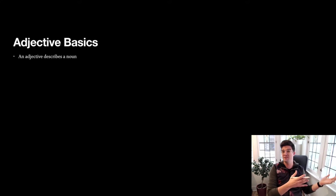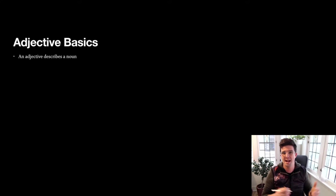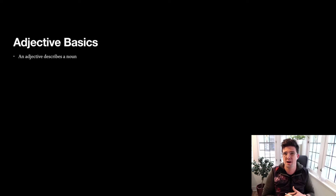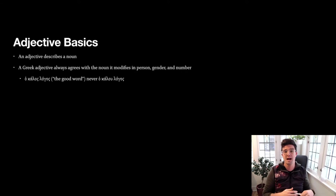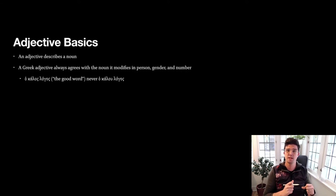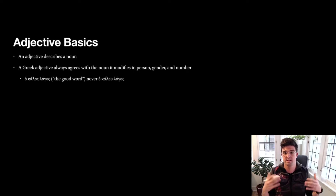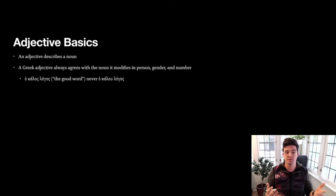An adjective, if you remember back to second or third grade, is a word that describes a noun. It gives a little bit more color to the life of a sentence. In Greek, an adjective is always going to agree with the noun that it modifies in case, gender, and number — so it's going to match up with the noun that it's describing in case, gender, and number.